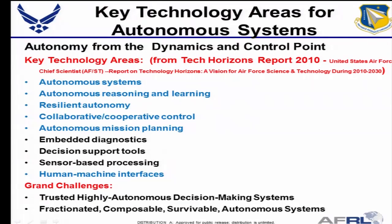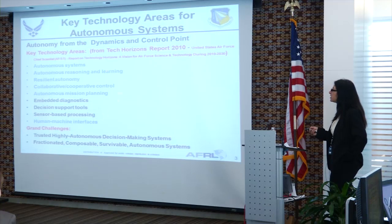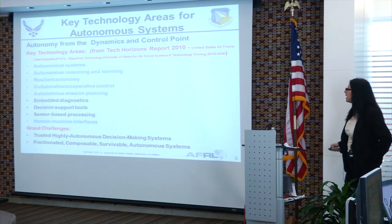I have to talk about the Tech Horizon Report. I remember I was having my program review at the time, and right in the middle, the Tech Horizon Report came online — and everybody in the review said, look how important you are as a field to our first mission. If you look at the key technology areas — autonomous systems, autonomous reasoning and learning, resilient autonomy, collaborative and cooperative control — all these are areas that Dynamics and Control addresses.